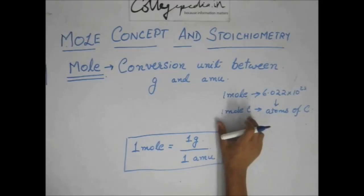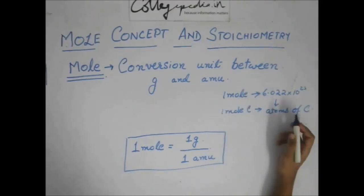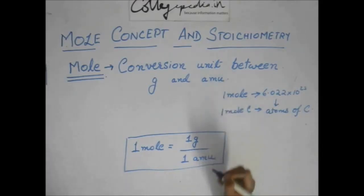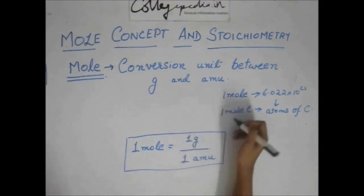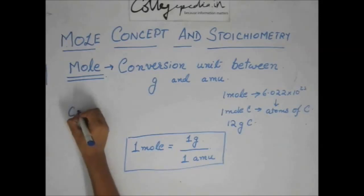So, this one mole carbon is 6.022 into 10 to the power 23 atoms of carbon. So, what do you say by one mole of carbon? One mole of carbon is 12 gram carbon. How?